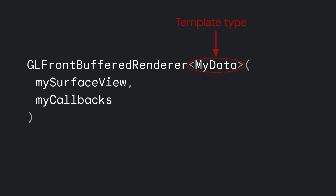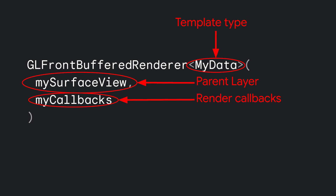Let's see how to use this API. First, we create a GL front-buffered renderer instance by providing our own class type to represent the input data used to render to the front and multi-buffered layers. Then we provide a surface view instance that acts as the layer for multi-buffered rendering, as well as the parent of the front-buffered layer. Finally, we provide an implementation of GL front-buffered renderer callbacks to specify our GL rendering logic.